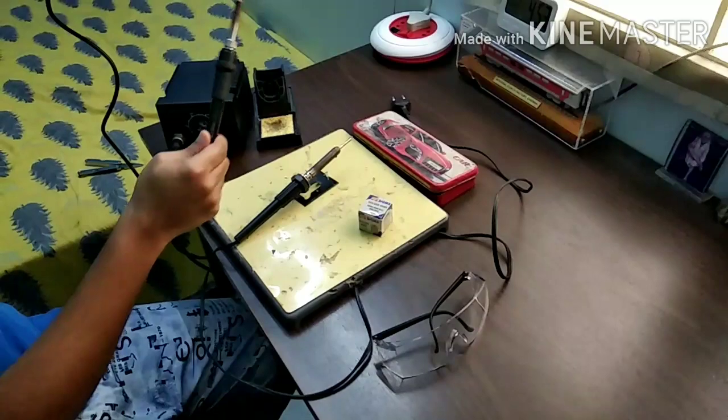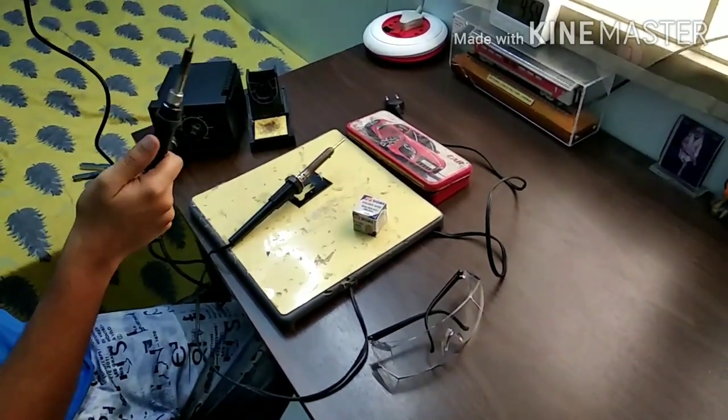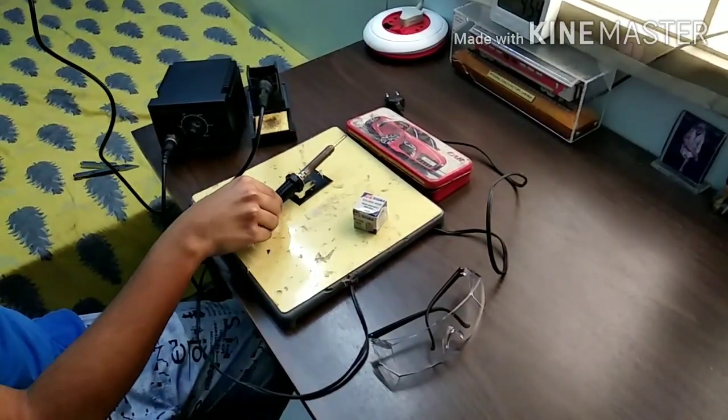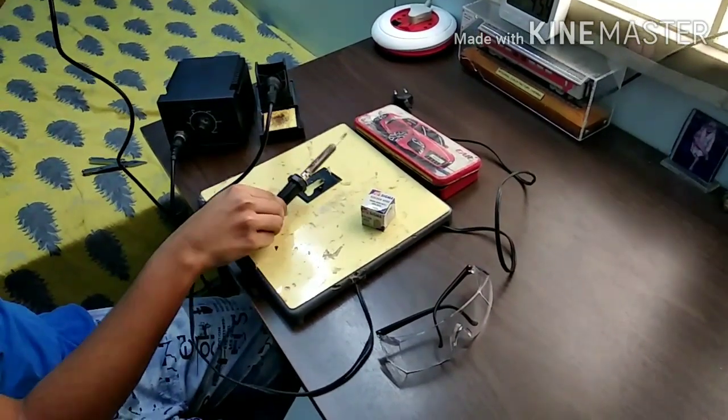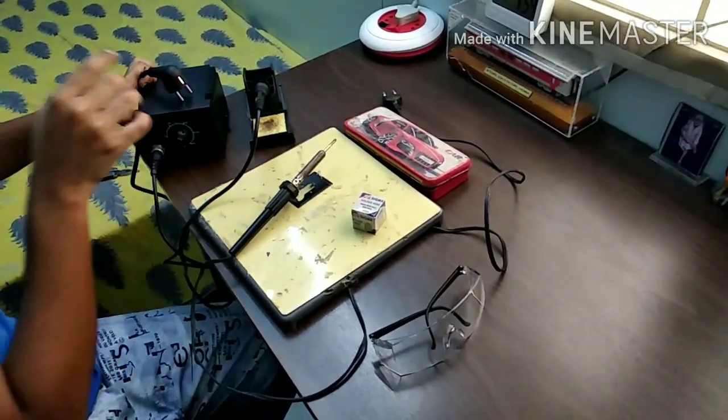Second, soldering iron only comes as iron itself whereas in a soldering station you may also get a stand, you may get a sponge and some models include a brass tip cleaner too.